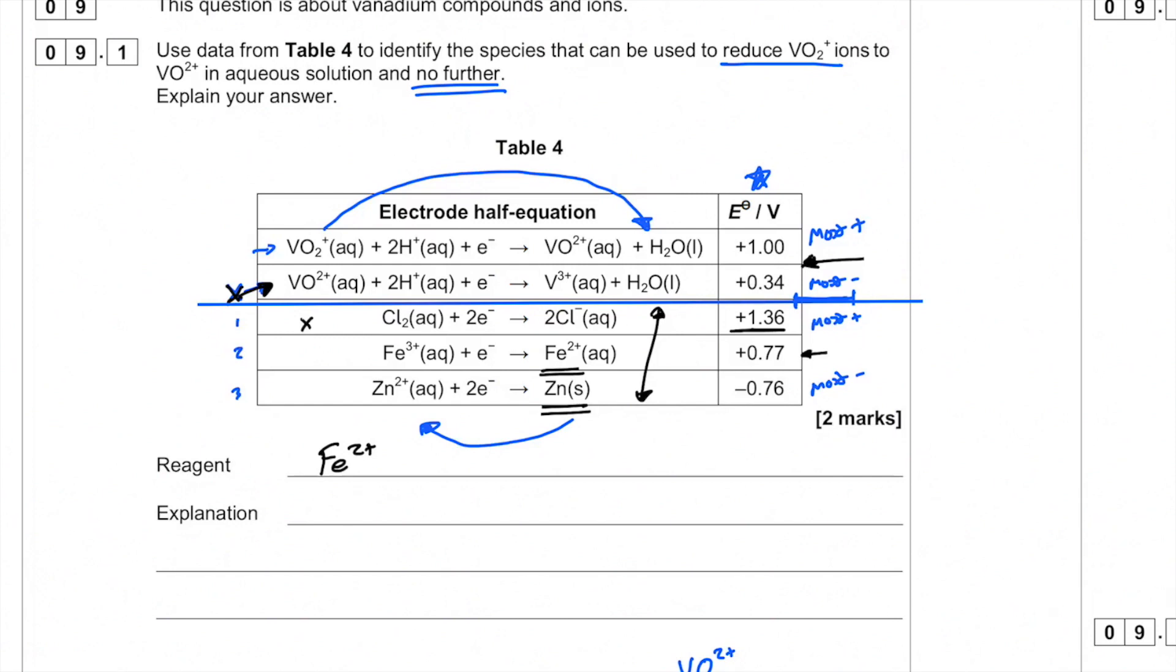So our explanation here is this: Fe2+ E° value is lower. I'm going to put less positive than the E° value for VO2+, but more positive than the E° value for VO2+. So in other words, it won't reduce that one. It will reduce the first one, but it won't reduce it any further.